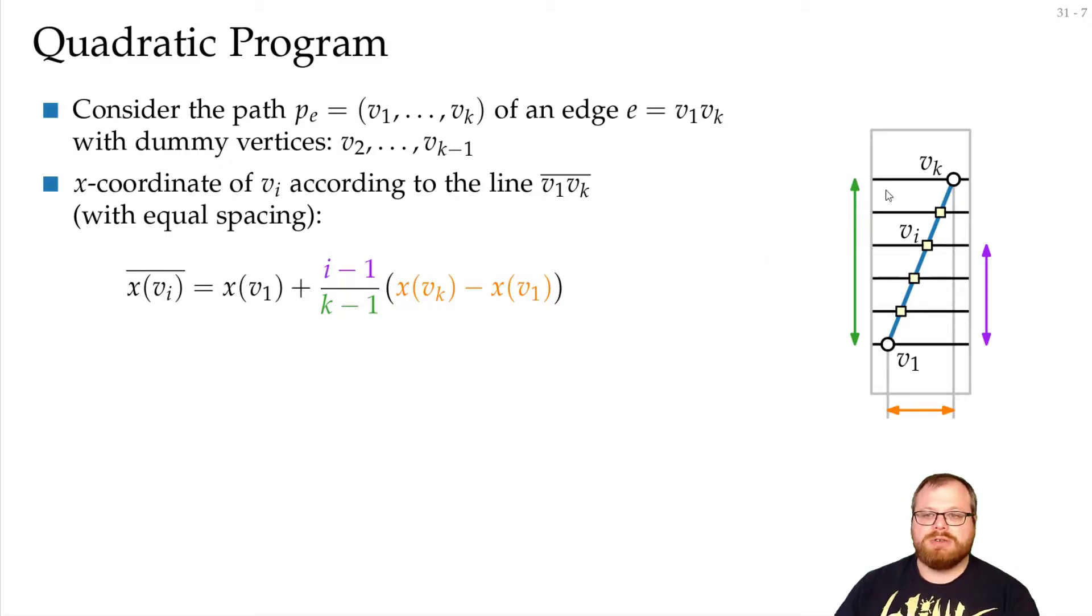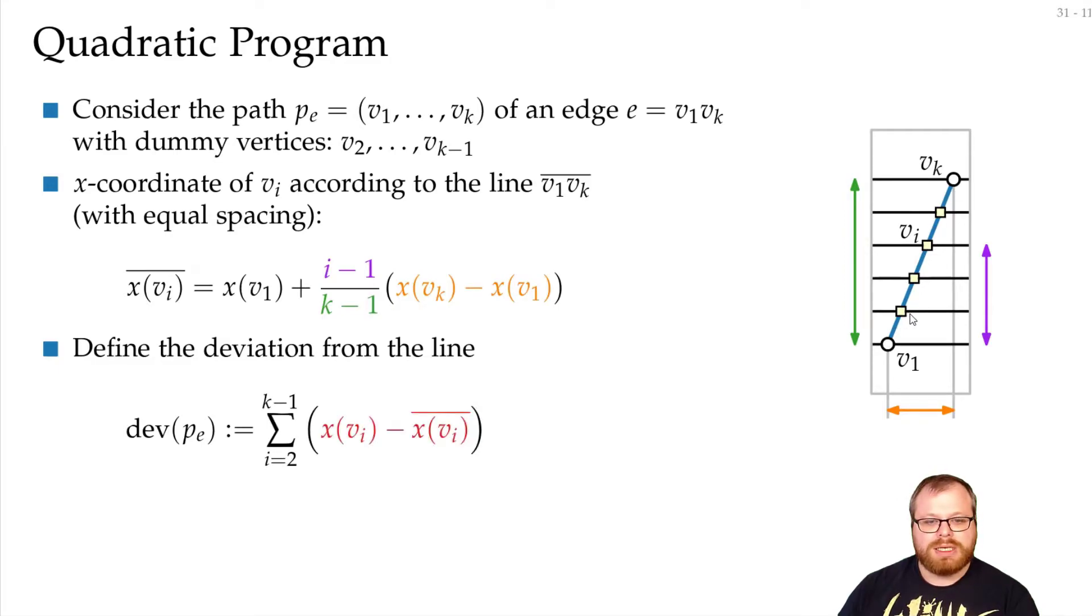Now, in general, it will not be possible to do all of those straight lines, but we can optimize the deviation from the line. So the deviation of this edge from this line is we look at all the dummy vertices, and we check how far away is it from its optimal position.